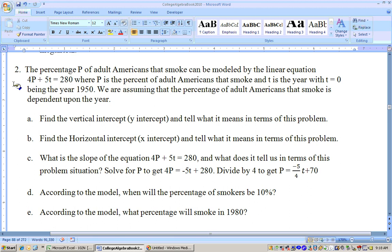So find the vertical intercept, that would be the p-intercept or y-intercept, so to find that, let x equals 0, or t equals 0, and if you let t equals 0, 5 times 0 is 0, so you just get 4p equals 280, divide through by 4, and you get p equals 70. What does that mean? Well, that means in year 0, 1950, according to this model, 70% of people smoked.